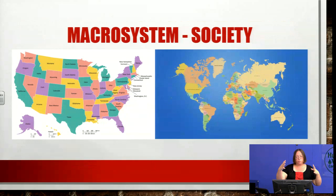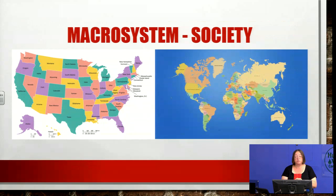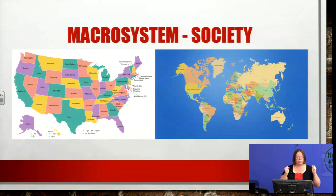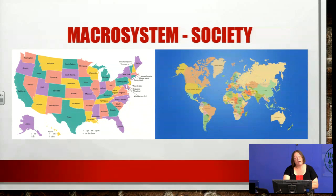The largest ring impacting the individual is the macrosystem — that's society. What are the influences of society where you are? As we've been going further and further out, the influence becomes less and less direct. The macrosystem's influence on you has to drill all the way down through your microsystems, so there's a lot of filtering going on. The microsystem is more influential than the macrosystem, but society where you are will still impact how you perceive things, your attitudes toward certain things, and what is and isn't acceptable behavior. The United States has its own set of national attitudes, which, looking at a picture of the world, are sometimes in conflict with how the rest of the world views things.